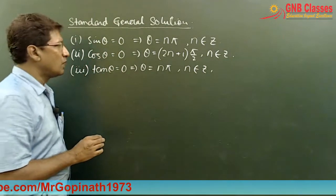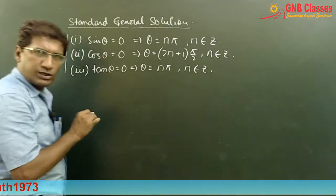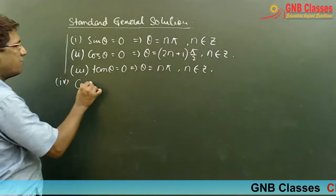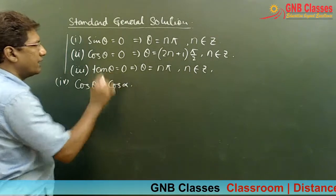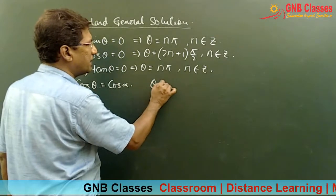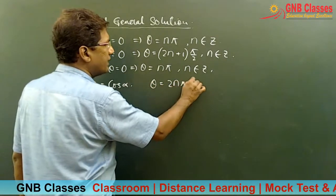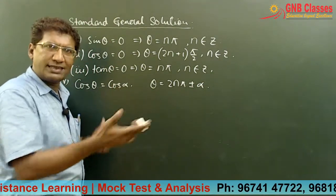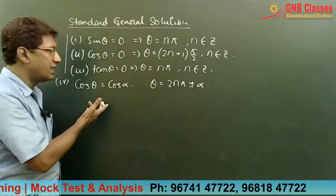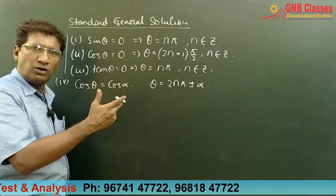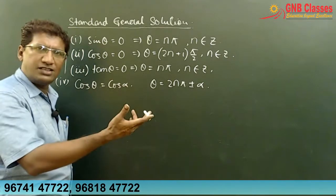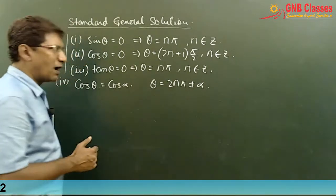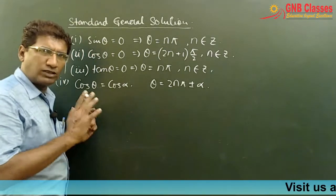Is it clear to all of you? These are all the standard general solutions. Now, if cos θ equals cos α, then θ is nothing but 2nπ ± α. These proofs are pretty easy and you can see them anywhere. I am showing you one, but you can refer to any general textbook for the proof part since I am not concerned about the proof here.